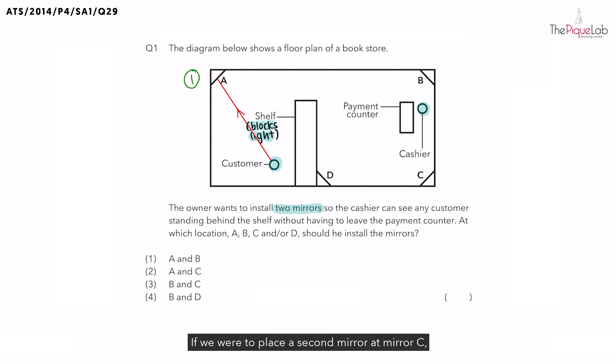If we were to place the second mirror at mirror C, look what happens. Light reflected off mirror A would once again need to pass through the shelf to travel to mirror C. Is that possible? No. Because the shelf blocks light, we cannot put the second mirror at C, neither can we put it at D.